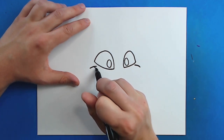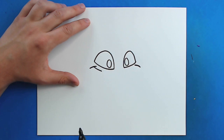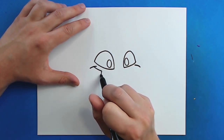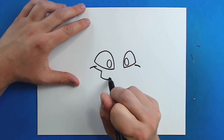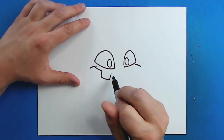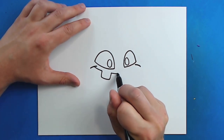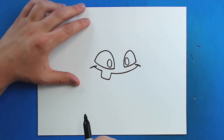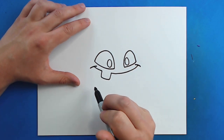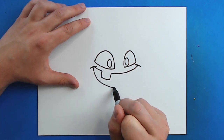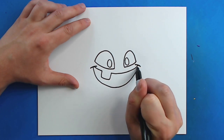Then starting here I'm gonna draw a little line that curves down to right about there. I'm gonna draw a line that goes down, over, and then up like a little square rectangle shape. Then I'm just gonna curve this around up to here to connect it to the other side. Now starting right here I'm just gonna make a big tall smiley face that curves all the way up to here.